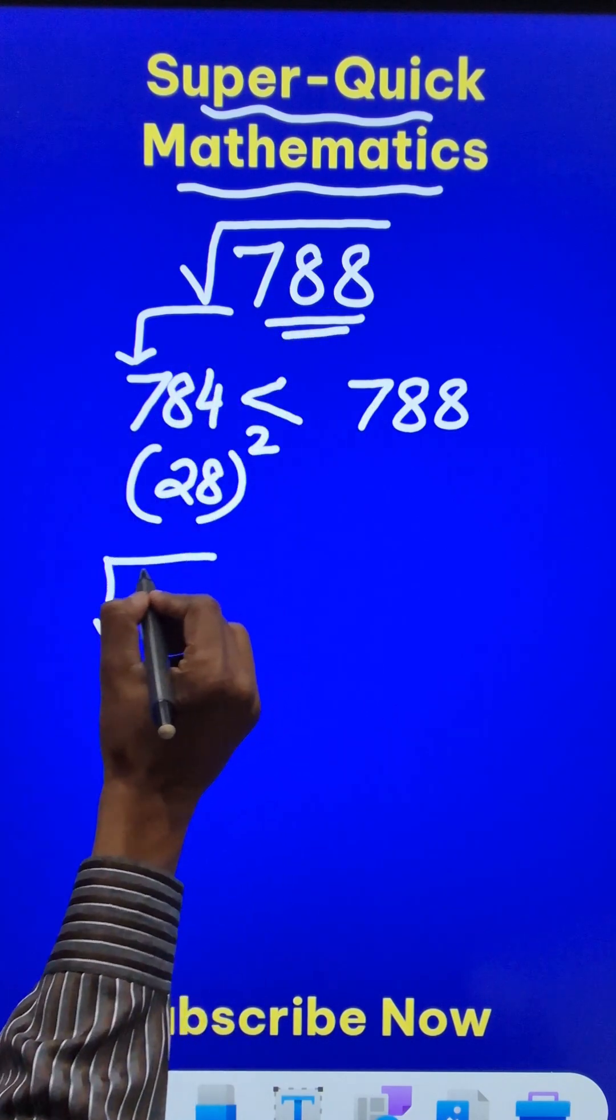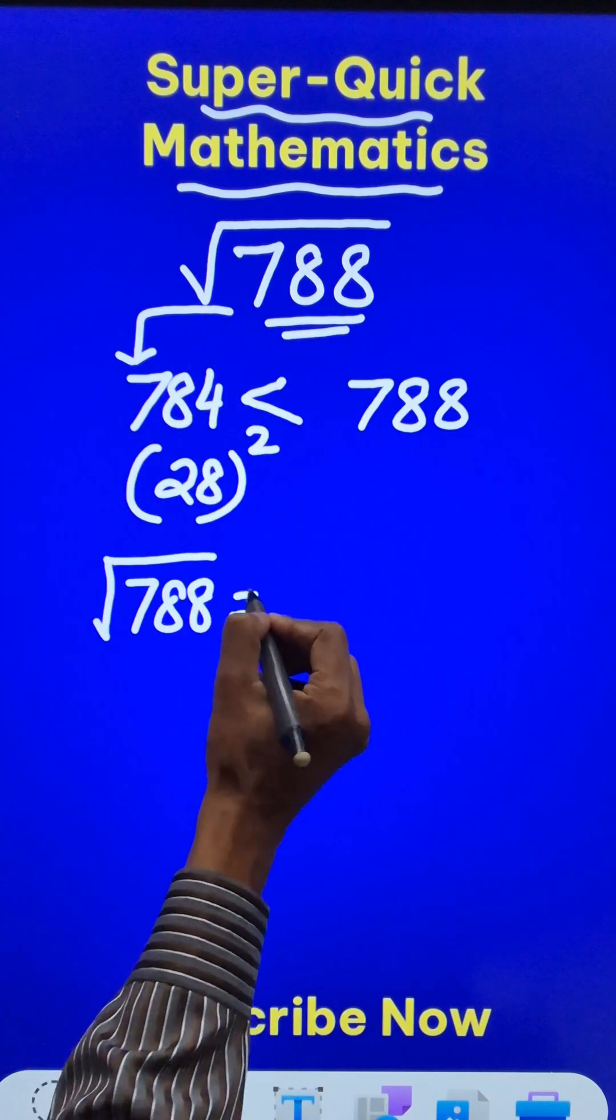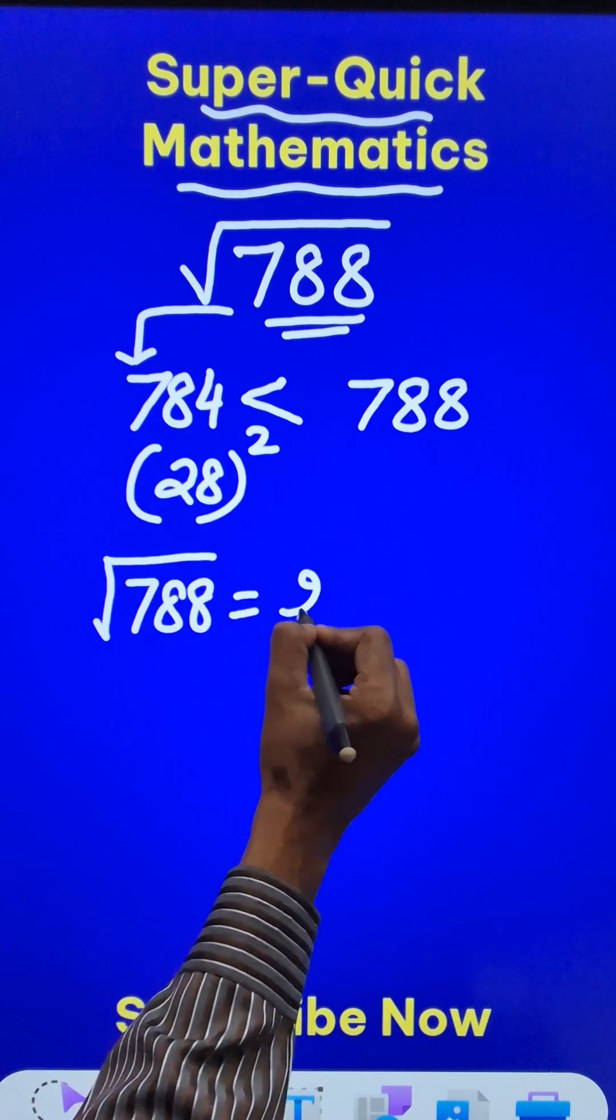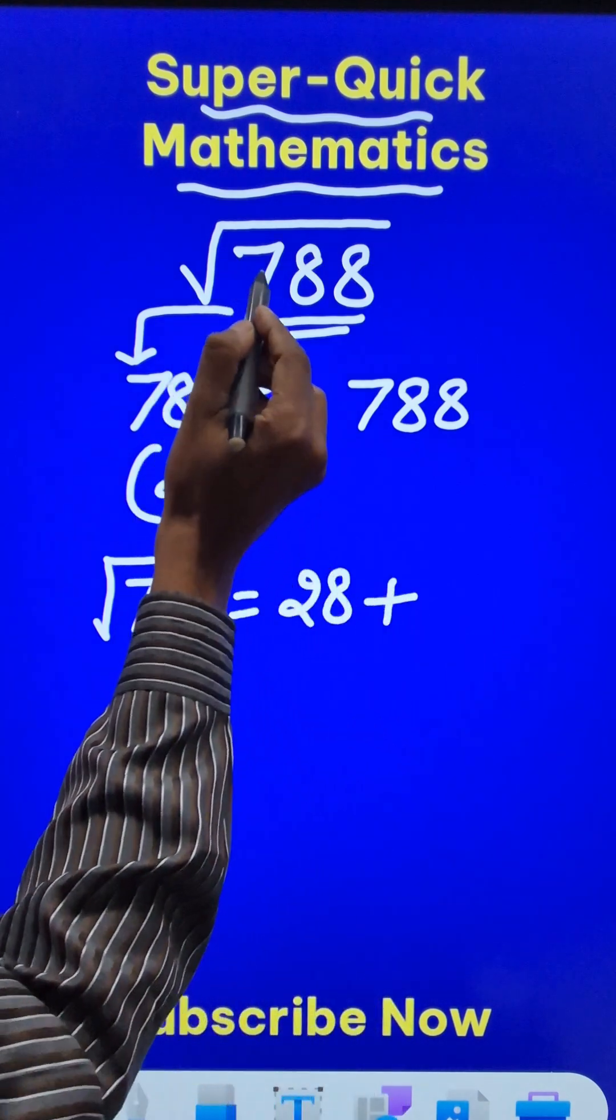And therefore the square root of 788 can be found directly by taking this number 28 first and then plus the deviation.